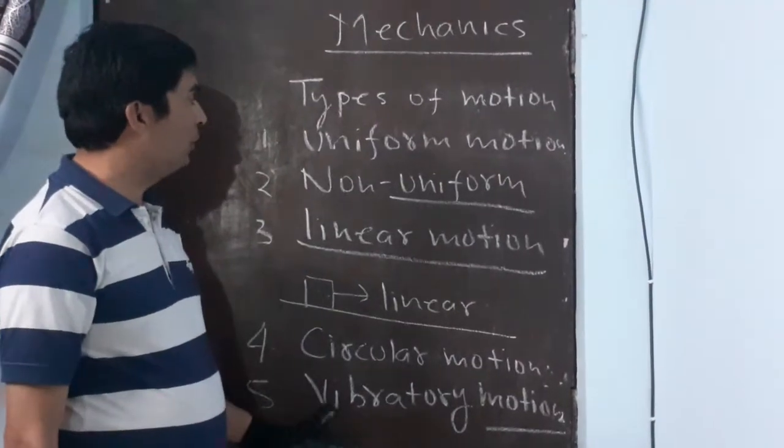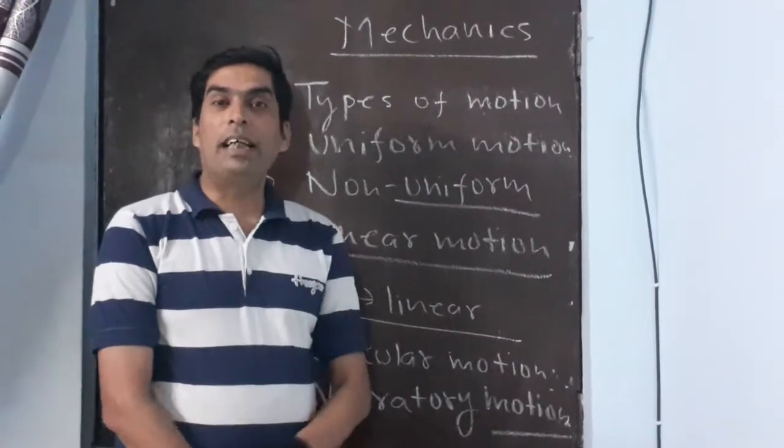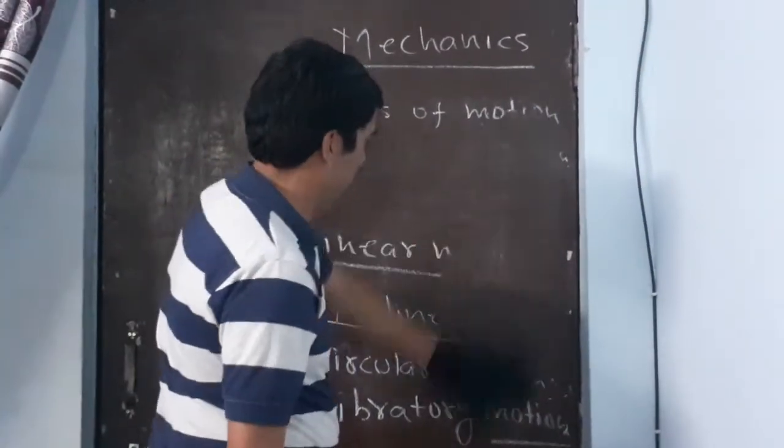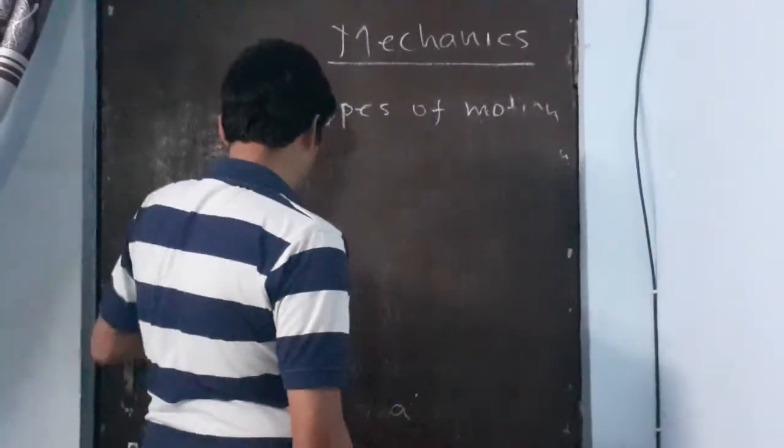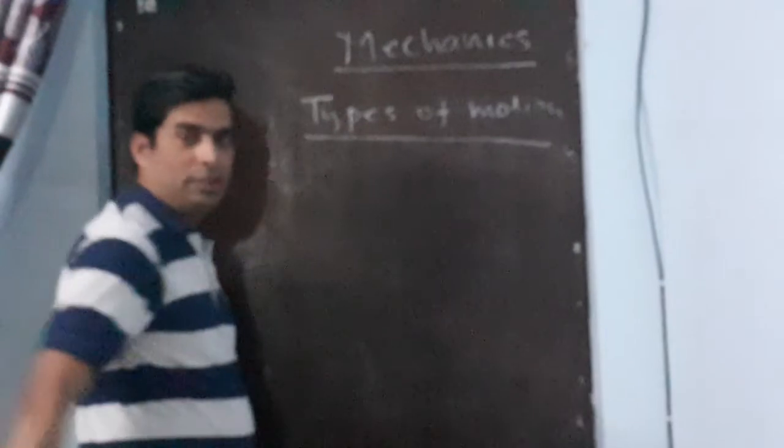So these are the types of motion according to the nature of motion. Now motion is also classified according to the coordinate system.